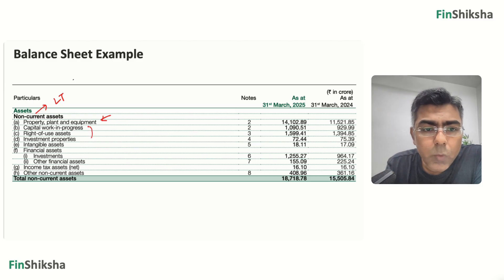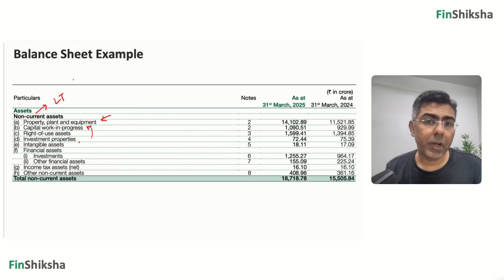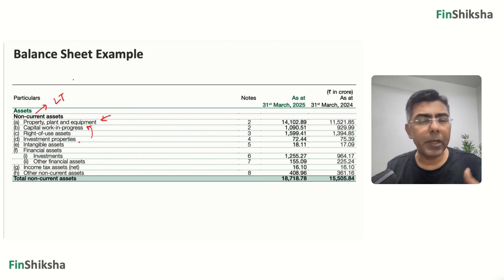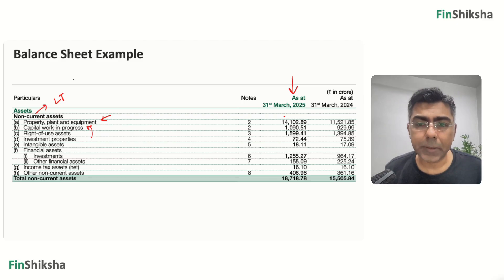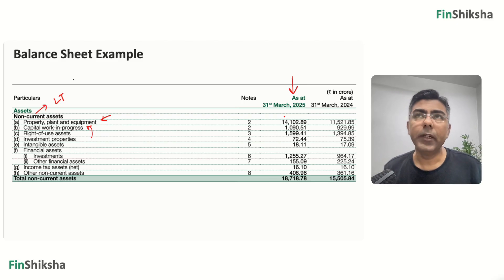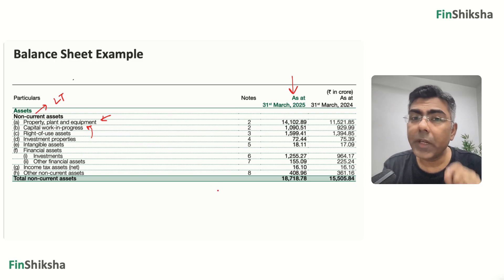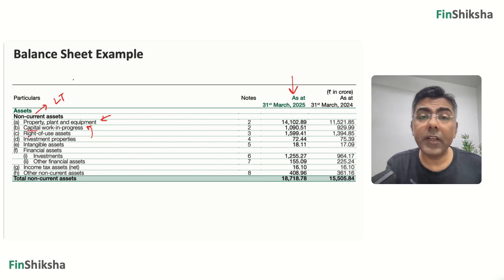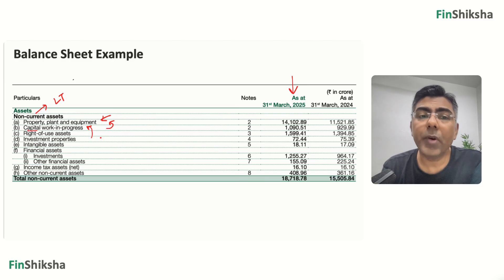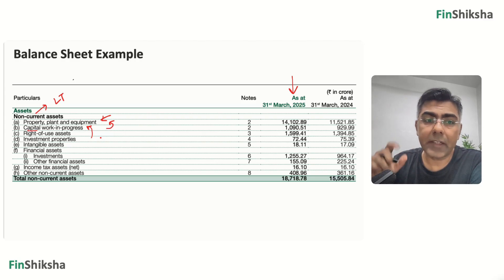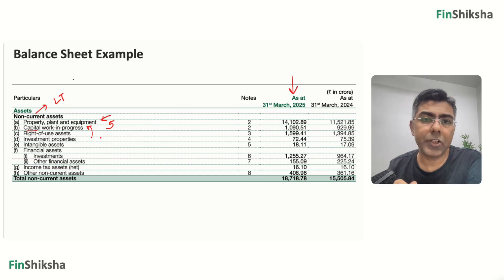Then you see a line item called capital work in progress. This means that if you are adding a bunch of stores or building a building and on 31st March 2025 you were not able to complete it — it's still under construction. So this is capital work in progress: a long-term asset being constructed at this point in time. Once completed, it will get settled into property, plant and equipment and become a fixed asset. Any under-construction capital expenditure will come here.